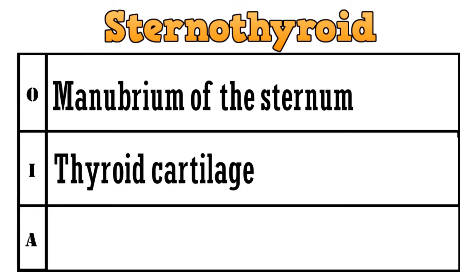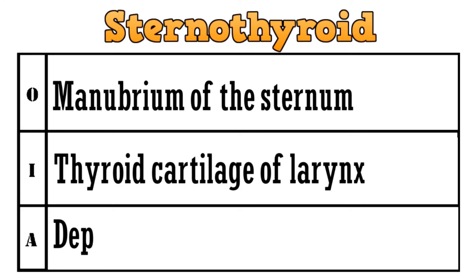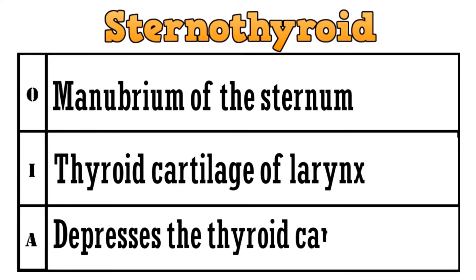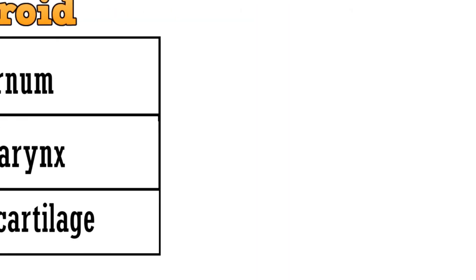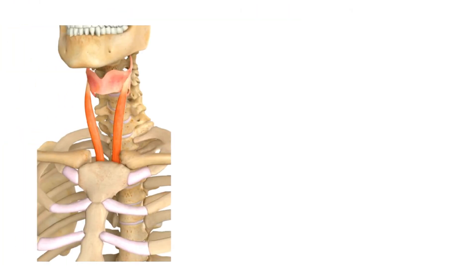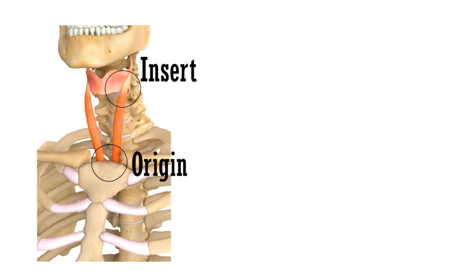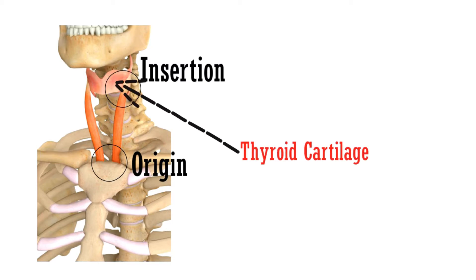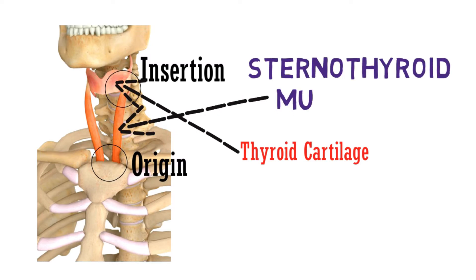The third muscle is the sternothyroid. It originates from the manubrium of the sternum and gets inserted to the thyroid cartilage of the larynx. The action of the muscle is to depress the thyroid cartilage. This encircled region is the point of origin of the muscle, and here it attaches to the thyroid cartilage. This red plate is the thyroid cartilage, and this is the sternothyroid muscle.